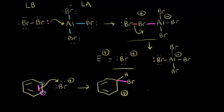Technically, it's the complex (not just Br⁺) that reacts with benzene. A more accurate mechanism has the magenta electrons from benzene attacking the bromine in the complex, while the red electrons kick off onto the other bromine, forming the AlBr₄⁻ complex. That's the more accurate picture, but it simplifies things to think of Br⁺ as the electrophile.